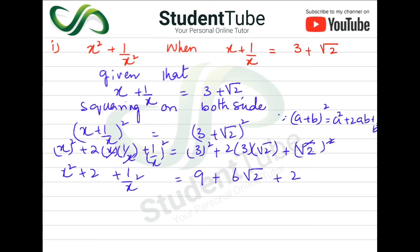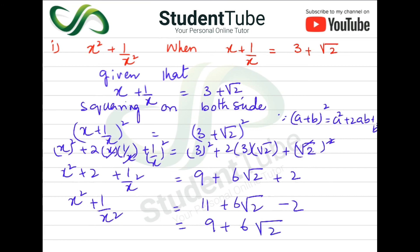So x squared plus 1 upon x squared equals 9 plus 2 giving 11, plus 6 under root 2, plus 2, minus 2. The 2 and minus 2 cancel, so x squared plus 1 upon x squared equals 9 plus 6 under root 2. That is our answer.